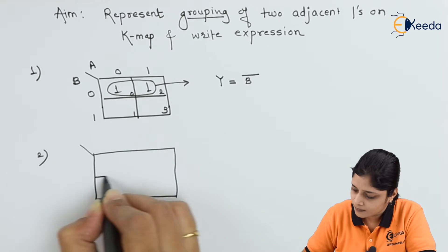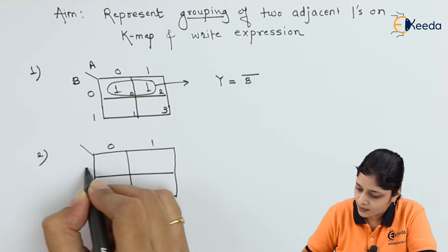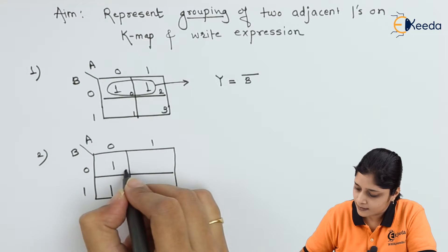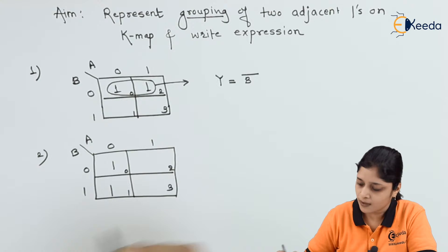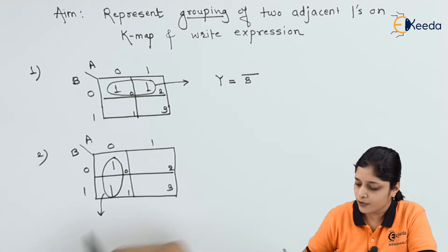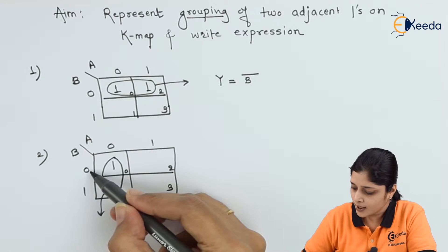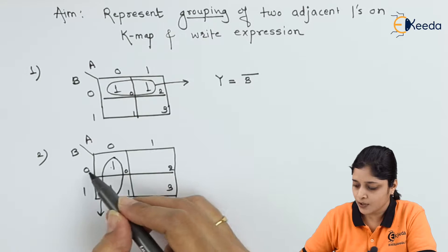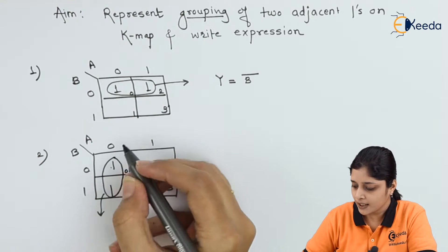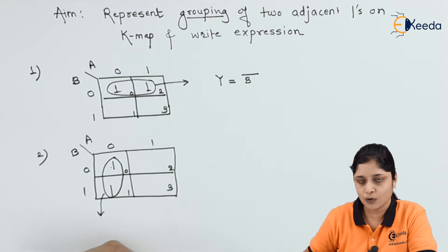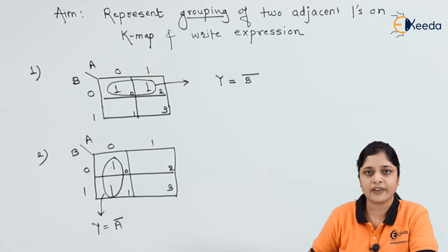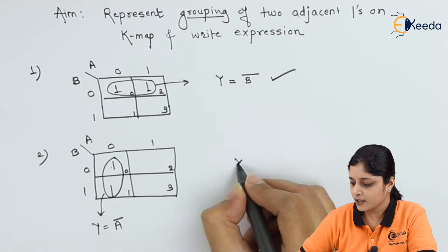For the next example, with A and B variables, positions of ones are at 0, 1, 2, 3. We make a group of these two and write the equation. Here B is changing — for this one B is 0, for this one B is 1. But looking vertically, A is 0 for both the ones, so Y equals A-bar. This is our final equation.